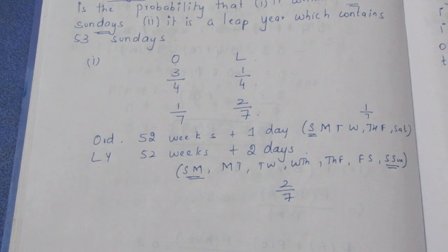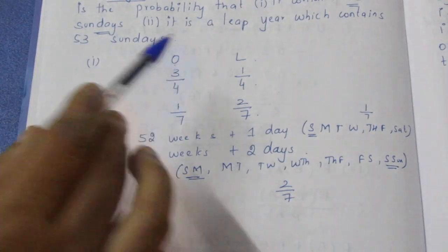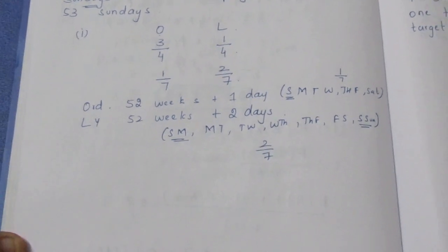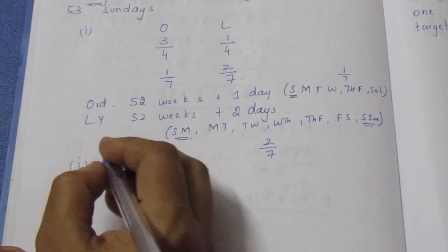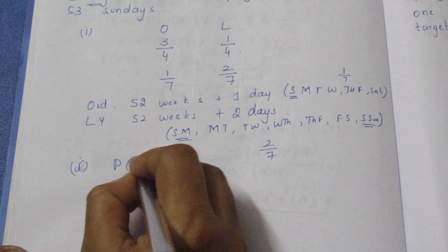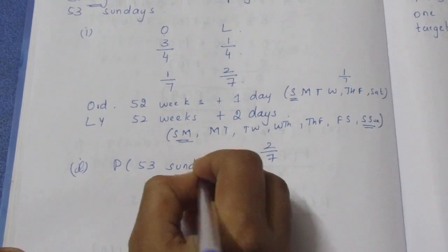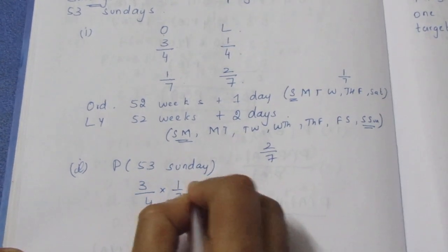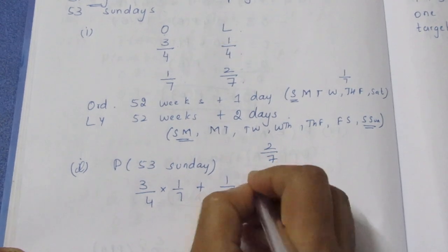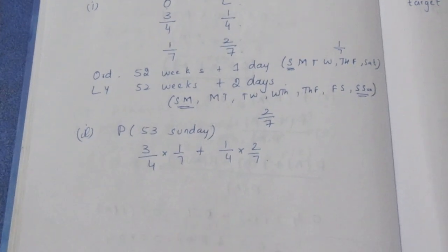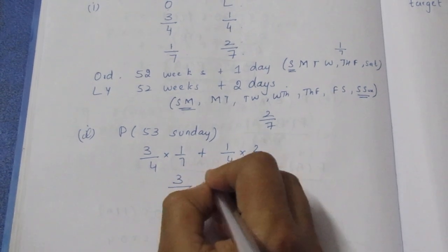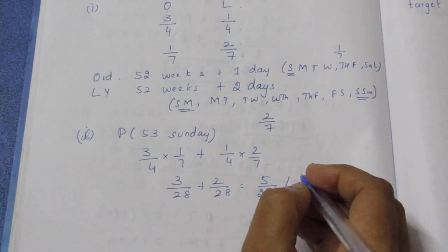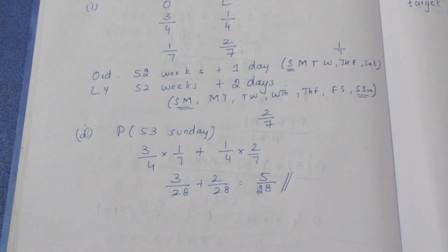Now we have to answer: what is the probability that a year contains 53 Sundays? Using total probability: P(53 Sundays) = P(ordinary year) × P(Sunday | ordinary) + P(leap year) × P(Sunday | leap) = 3/4 × 1/7 + 1/4 × 2/7 = 3/28 + 2/28 = 5/28. So the first part answer is 5/28.